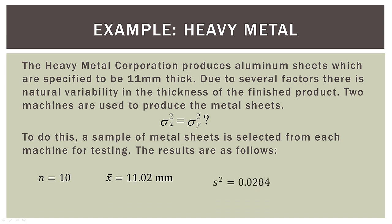So for machine one, we had a sample size of 10 sheets. The sample mean was 11.02 millimeters. The sample variance, S squared, was 0.0284. And the sample standard deviation was 0.1687 millimeters.